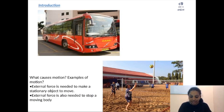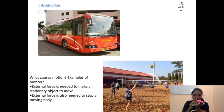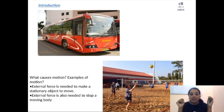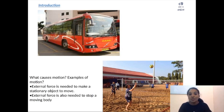So what causes this motion? The car was in a position and its position was not changing — it was in rest. When I pushed it, it started moving. Similarly, the bus is not changing its position and is in rest, while the ball is changing its position because someone is pushing or pulling it. What is causing the change in position of an object is some external force.